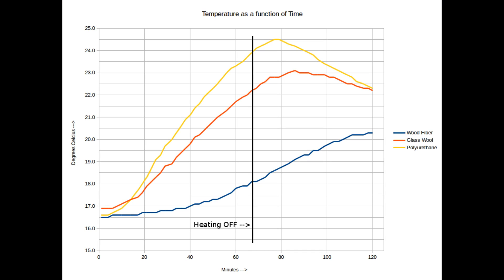We get three lines: the blue line is the wood fiber, red is glass fiber or glass wool, and the yellow one is the polyurethane.